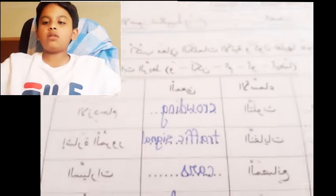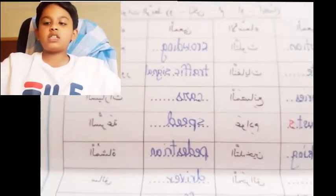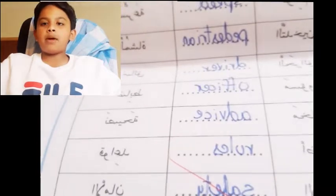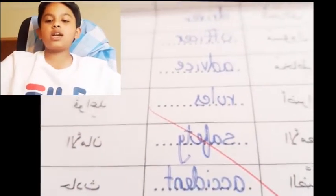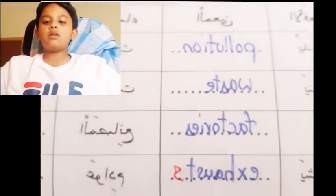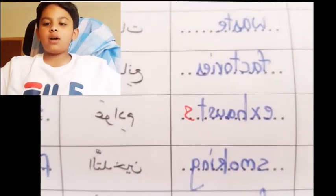First column: Izdiham means crowding, Isharata al-muroor is traffic signal, Sayyarat is cars, Surah is speed, Masha is pedestrian, Saiq is driver, Dhabit is officer. Officer can be for traffic or police officer. Nasihah is advice, Qawaid is rules, Al-Aman is safety. Hadith is accident. Second column: Tulawith is pollution, Nafayat is wastes, Al-Musani'ah is factories.